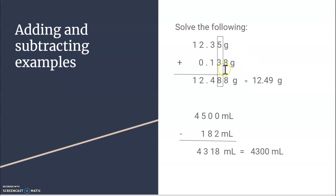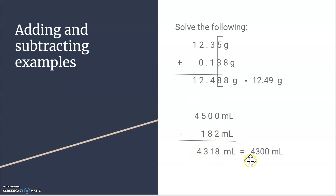The eight after the hundredths place means I round up to 12.49. Here's another example: 4500 milliliters minus 182 milliliters. Subtracting normally, the first number only goes to the hundreds place — it looks like a rounded number — while 182 goes to the ones place. I have to take the worst case, which is the hundreds place. What's after the hundreds digit? Less than five, so I round to 4300 milliliters.